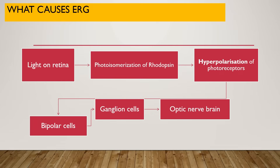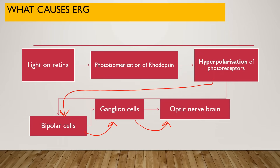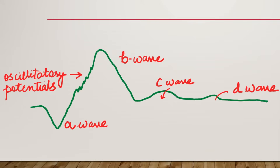Summarizing the physiology of ERG: you give a stimulus — a red flash, full flash, flicker flash, or pattern — which causes changes at the level of the photoreceptors, leading to photoisomerization of rhodopsin. As we know from the visual cycle, this causes hyperpolarization of the photoreceptors, generating an electrical response that travels to the bipolar cells, then the ganglion cells, and on to the optic nerve and brain. Throughout this process, electrical response is generated and depicted as a waveform — that is the ERG.